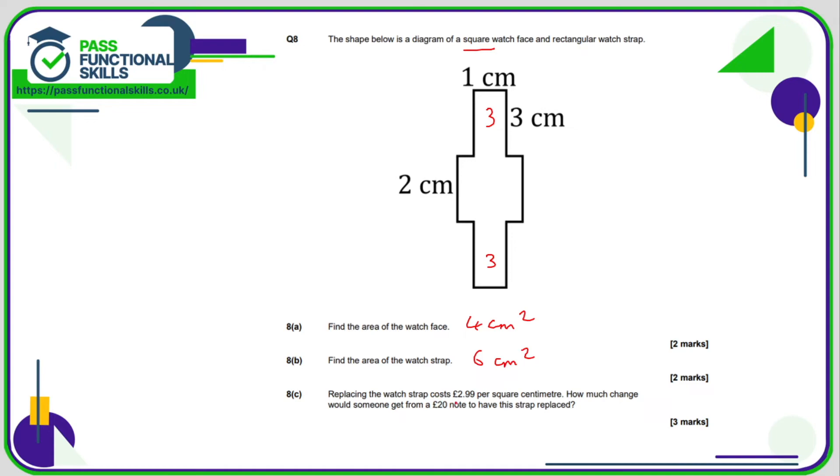So replacing the watch strap costs 2.99 per square centimetre. So how much change would someone get from a 20 pound note? So if it's 2.99 per square centimetre, then we've got 6 square centimetres. So 6 times 2.99. We're not allowed to use a calculator for this question, which is a little bit of a blow. So I'm going to,